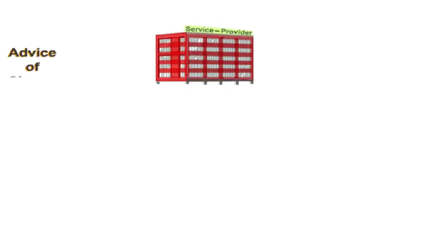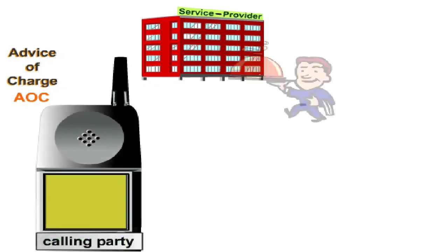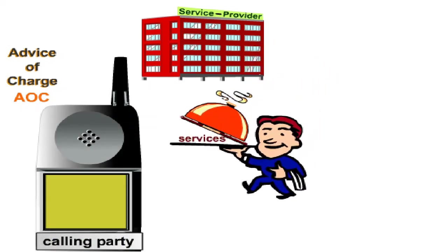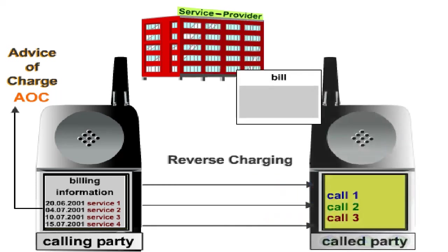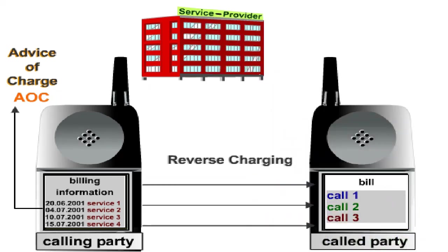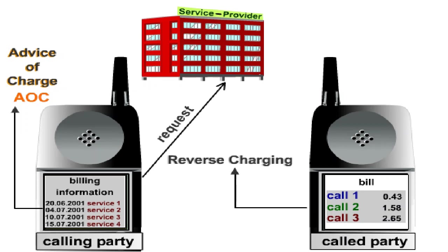The Service Advice of Charge, AOC, is a supplementary service that allows a mobile subscriber to receive service-related billing details. With reverse charging, a called subscriber can be charged for certain calls; each individual call is analysed and evaluated. Reverse charging is activated at request by the calling subscriber and must be permitted by the called subscriber. At present, reverse charging is not implemented in GSM networks.